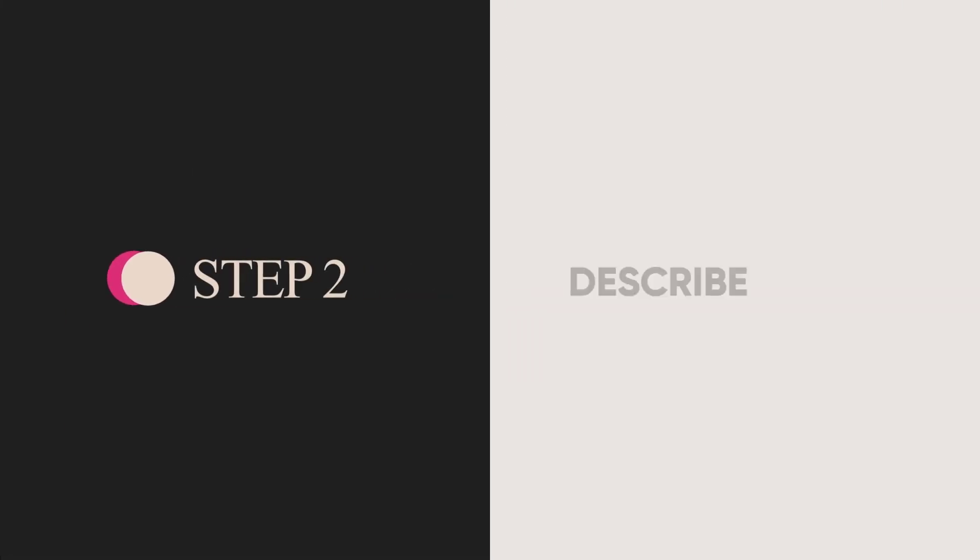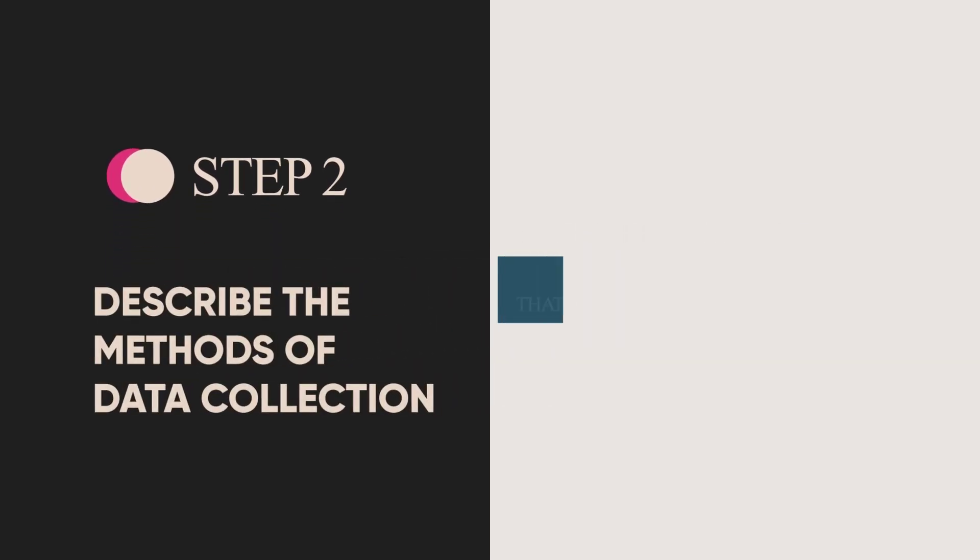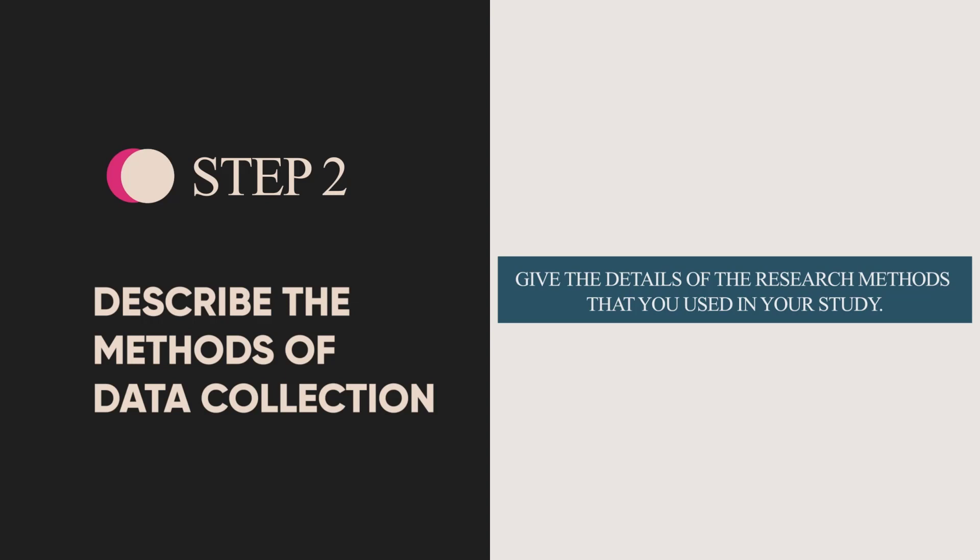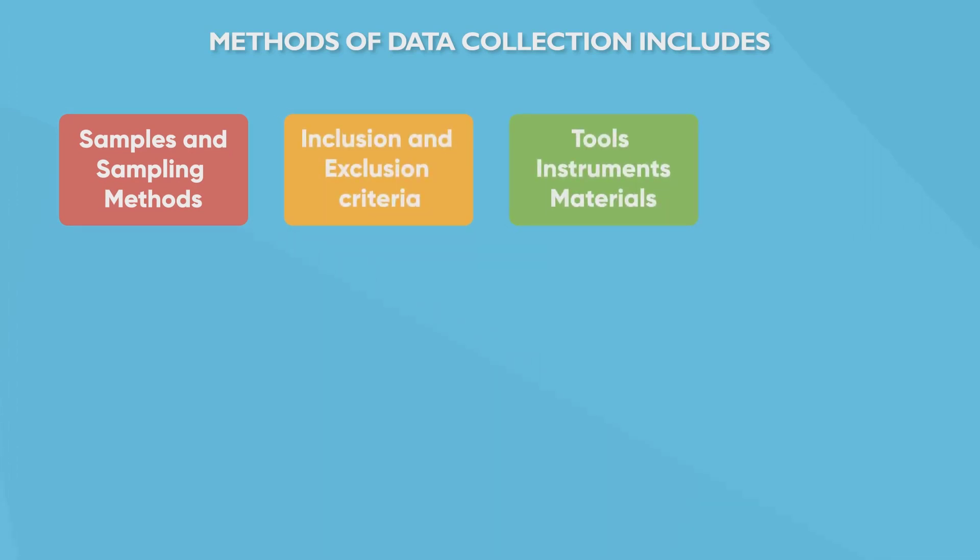Step 2: Describe the methods of data collection. After you introduced the overall approach of your study, now you can give the details of research methods that you used in your study. Generally, you should include samples and sampling methods, inclusion and exclusion criteria, tools, instruments, materials used, procedures used, variables measured, what and how.